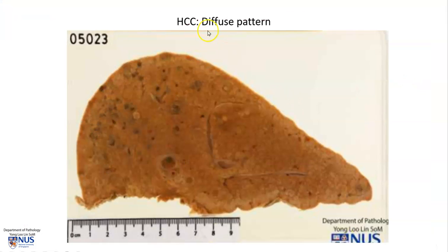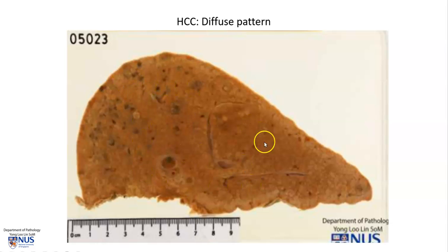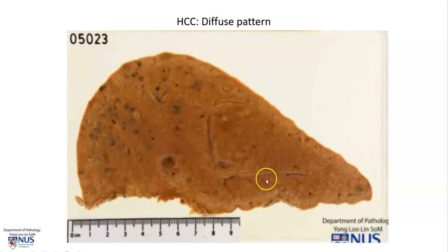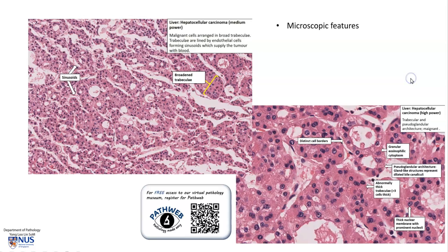And here is yet another pattern, which is the diffuse pattern of infiltration, where we do not really see a single discrete well-circumscribed tumor mass, but rather just diffusely infiltrative tumor. Microscopic examination will show the features of hepatocellular carcinoma.